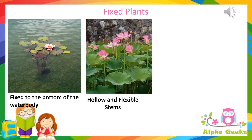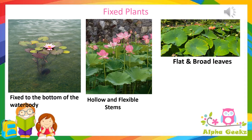The stems are long, hollow, light, and flexible so that they can stay afloat and can bend easily with the waves of water and do not get broken or uprooted. Their leaves are broad and flat, which help in staying afloat and to get enough air and sunlight for photosynthesis.